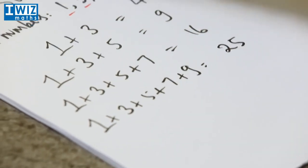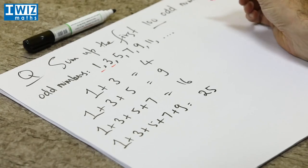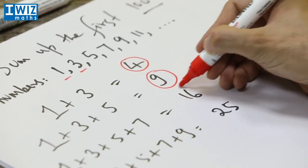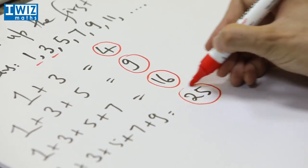Now let's look at all the answers a bit carefully. So we have 4, 9, 16 and 25.